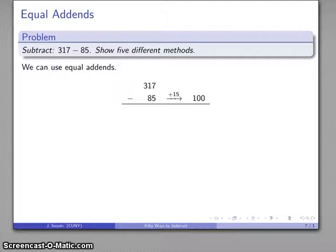So if I add 15, I get 100. I have to add to both, get 332. And if I do the subtraction, my difference is going to be 232.